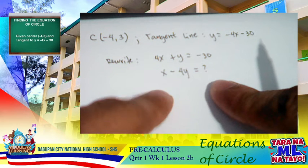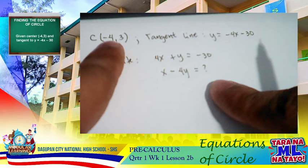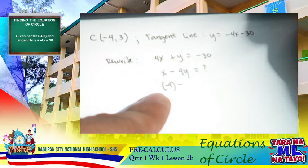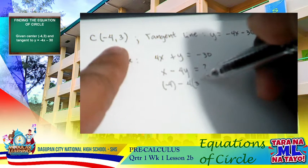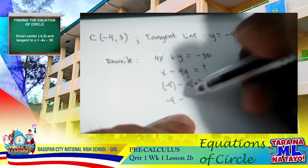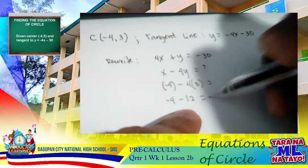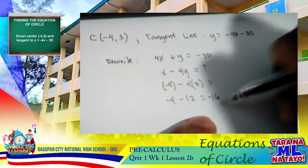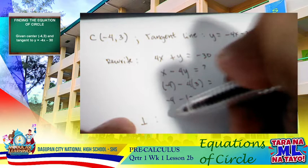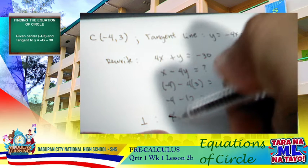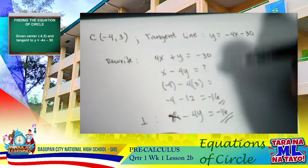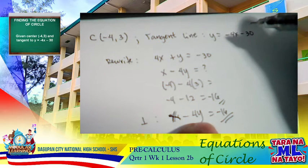To find the constant, we substitute the center coordinates, negative 4 and 3, as the values of x and y. So we get negative 4 plus 4 times 3, which gives negative 4 minus 12 equals negative 16. Therefore, the equation of the perpendicular line is x minus 4y equals negative 16.